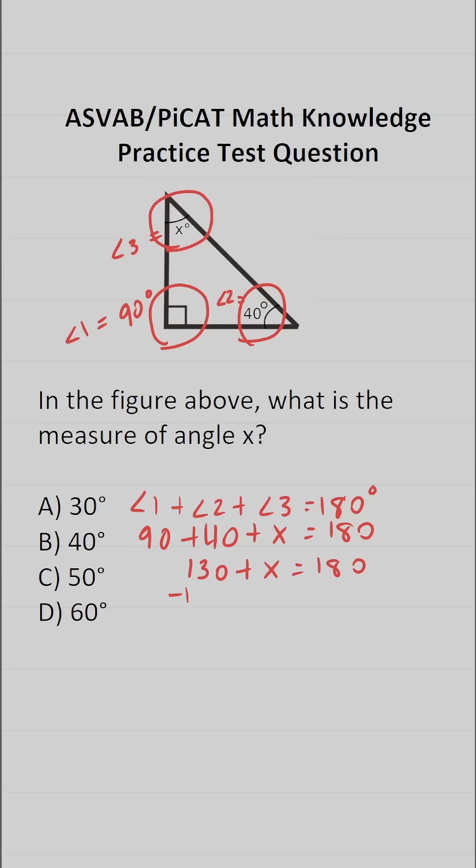To get x by itself, we're just going to subtract 130 from both sides of this equation. In doing so, this crosses out, leaving you with x over here. You should be able to do 180 minus 130 mentally and say that that is 50. So we can see the measure of angle x is C, 50 degrees.